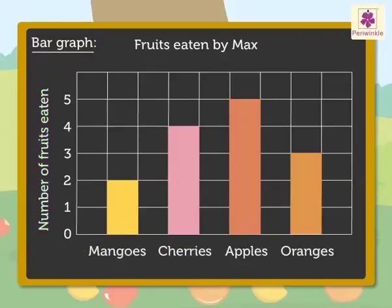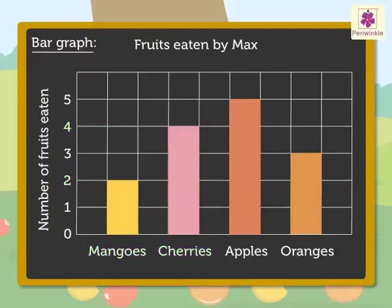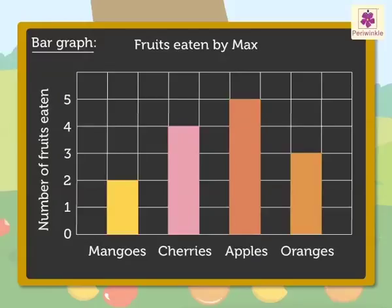The scale tells us the number of fruits eaten. Hence, from the bar graph we can say Max ate two mangoes, four cherries, five apples, and three oranges. From the information obtained, we can say how many fruits Max ate in all, how many more apples he ate than mangoes, and so on. Hence, we can obtain a lot of information from a bar graph.